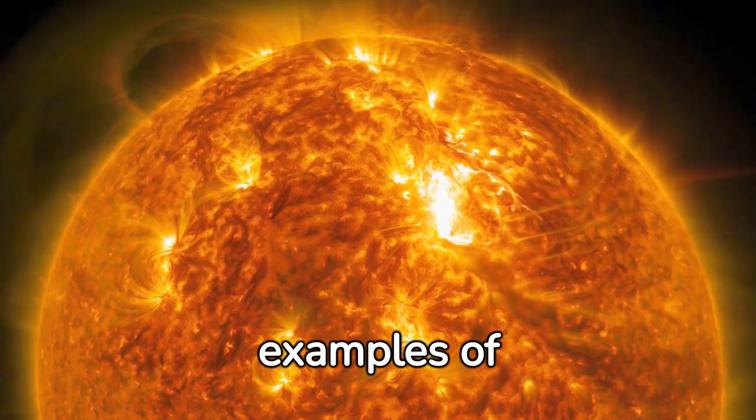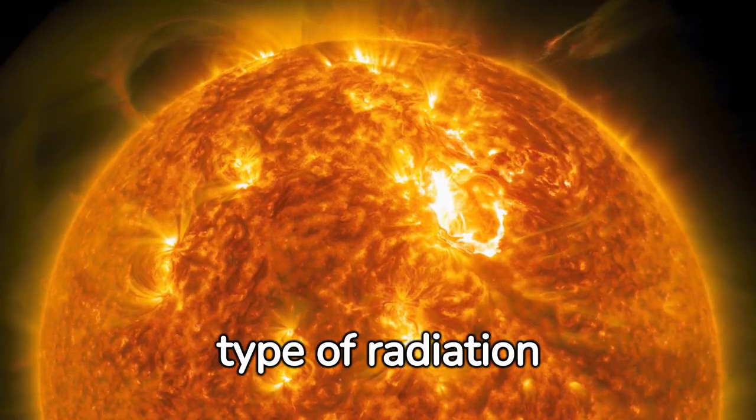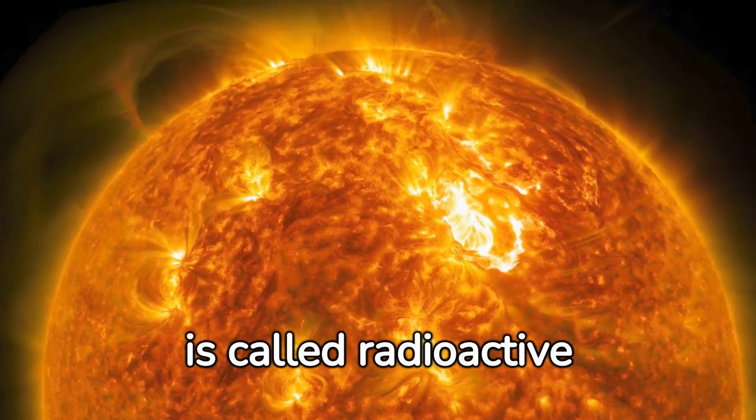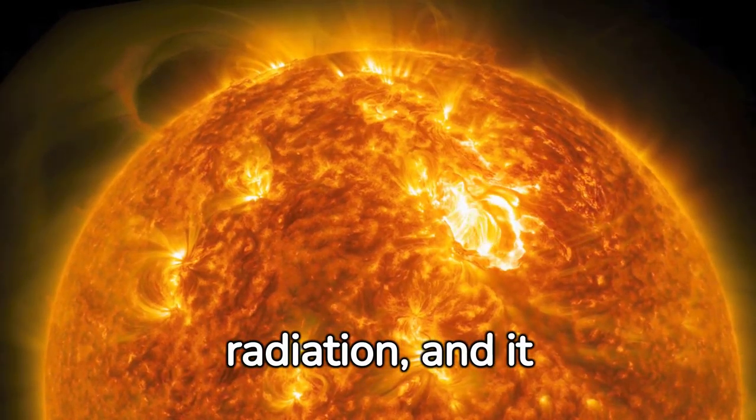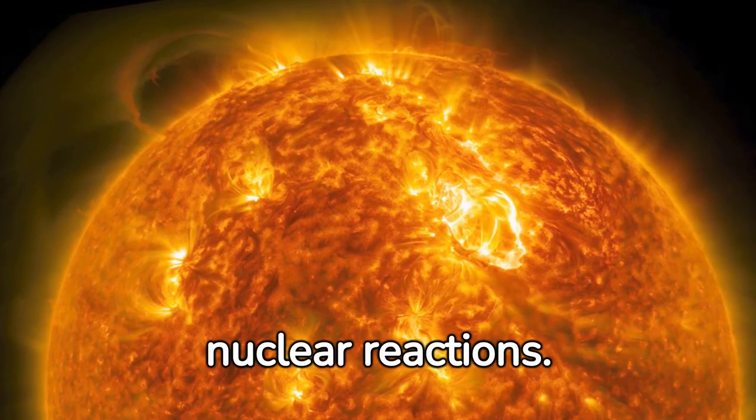All these are examples of electromagnetic radiation. The other major type of radiation is called radioactive radiation, and it comes from either radioactive material or nuclear reactions.